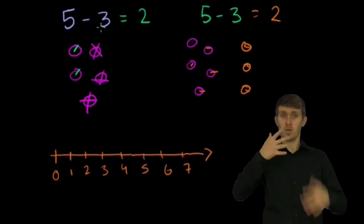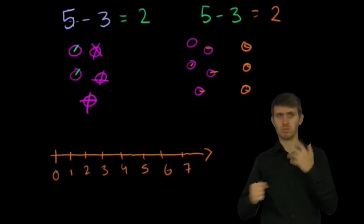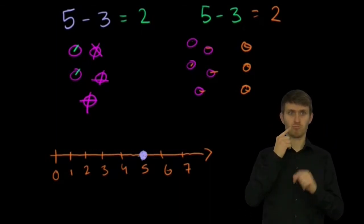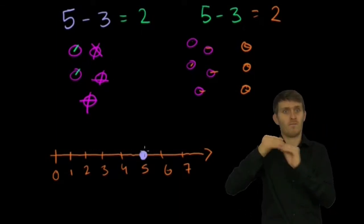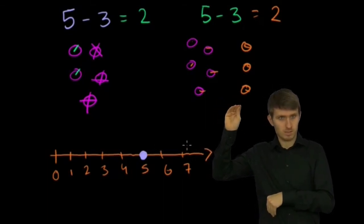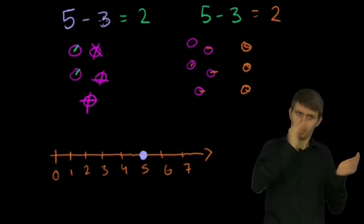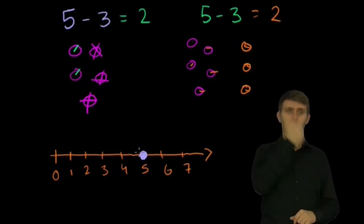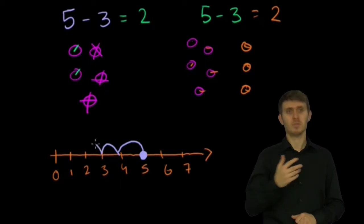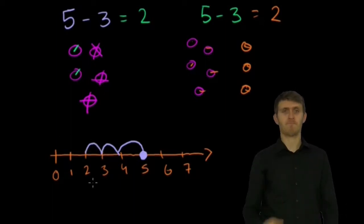So if we do 5 minus 3, if we view 3 as being taken away from 5, 5 minus 3 means start at 5. If I did 5 plus 3, I would jump 3 spots to the right, because that's increasing the number of things I have. But since I'm subtracting 3, I want to decrease by 3. So I decrease by 1, 2, 3. And I get to 2, just like that.